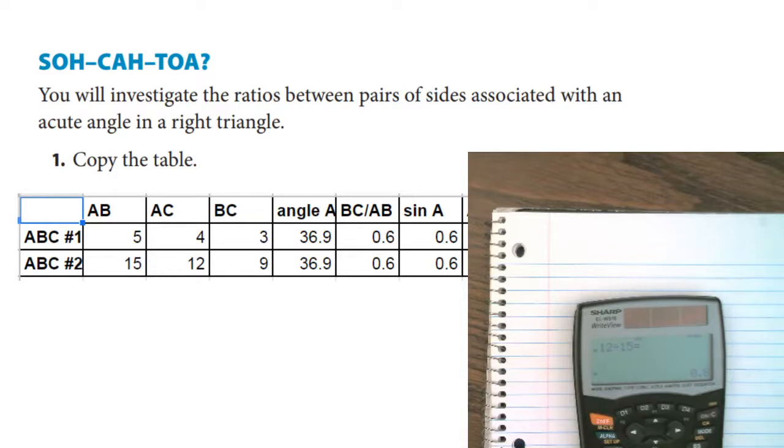So we're comparing different pairs of sides. We've compared BC over AB, we've compared AC over AB. Now we're going to compare BC over AC. So if we do that, we get 3 divided by 4, which is 0.75, and what if we do 9 divided by 12, also 0.75. We call that ratio the tangent ratio. So even though both of these triangles are different sizes, they have the same angles and the same ratios.